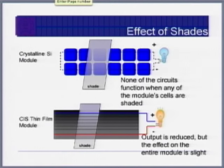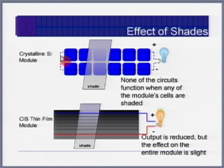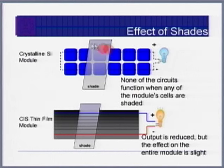Another advantage of thin film modules is better performance under partial shading. In crystalline silicon, cells are rectangular and a shadow can completely block an entire cell, cutting current to zero in the whole series-connected module. In thin film, the cells are long narrow strips, so a shadow typically covers only part of a cell's area, meaning the unshaded portion remains active and current is reduced but not zero.